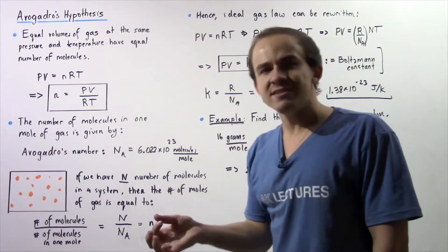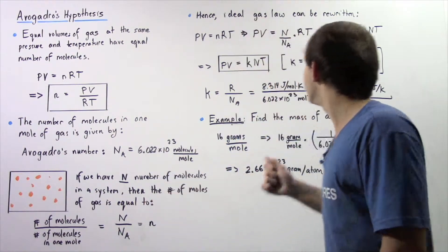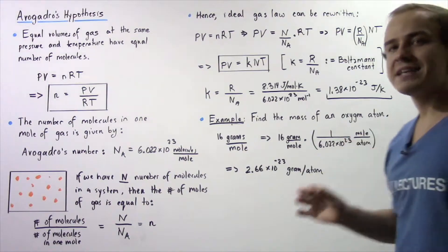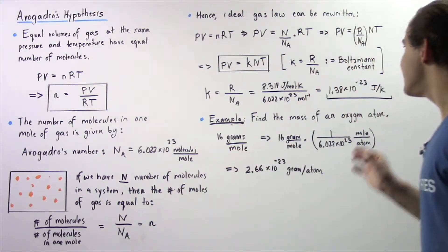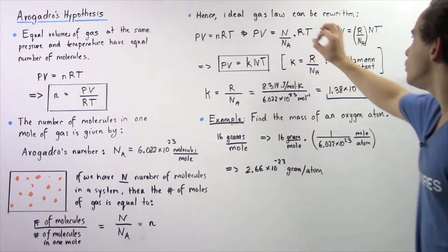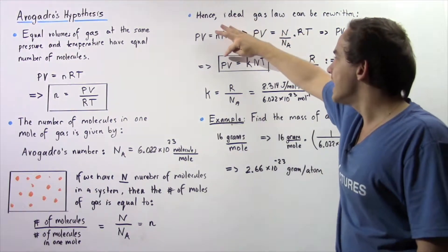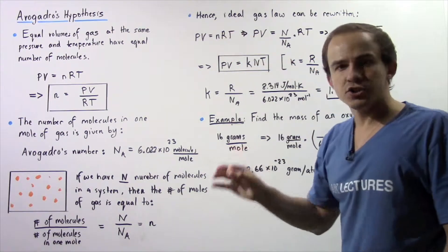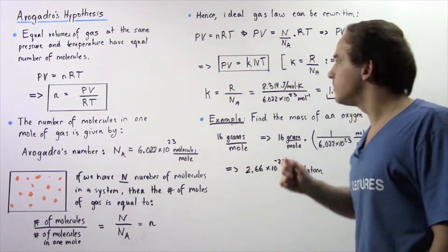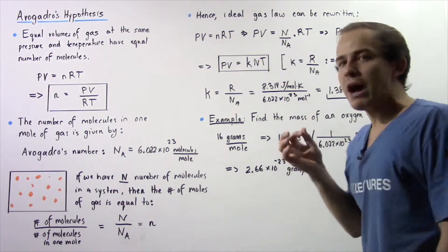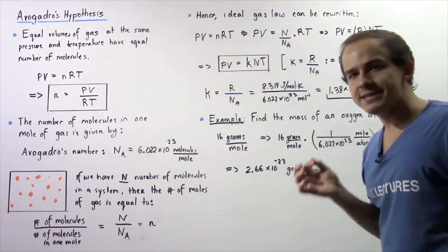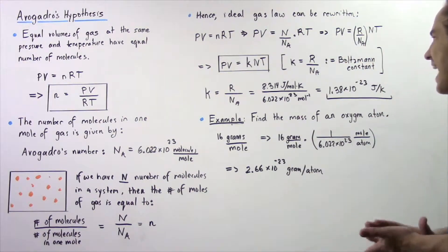The ratio of two constants is equal to a constant. This constant, R divided by N_A, is known as the Boltzmann constant, and it's given the lowercase letter K. So we can rewrite this equation as: P times V equals the Boltzmann constant K multiplied by capital N, our number of molecules in our gaseous system, multiplied by T, our temperature given in Kelvin.